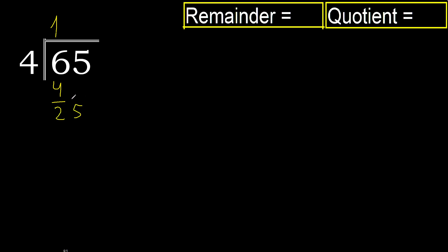Bring down 5, making 25. 4 multiplied by 7 is 28 — 28 is greater. 4 multiplied by 6 is 24. 25 minus 24 is 1.